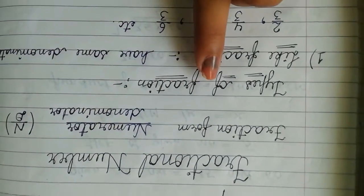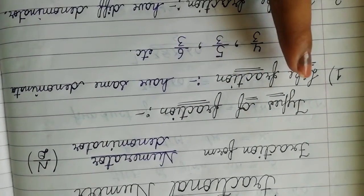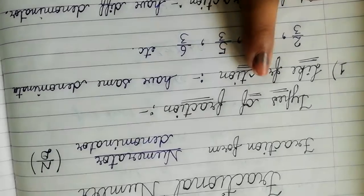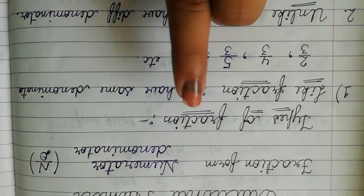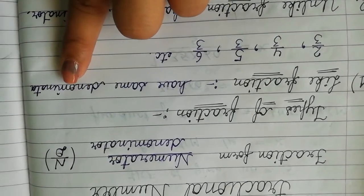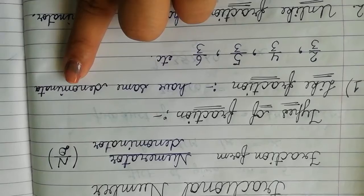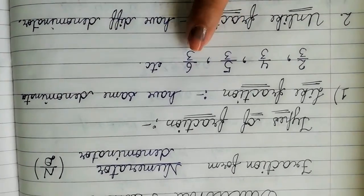We have some types of fraction. First is like fraction. What is the meaning of like? Like means same. So like fraction is that fraction which has same denominator. Jinka denominator kya hoga? Same hoga. Like 2 by 3, 4 by 3, 5 by 3, 6 by 3, etc.